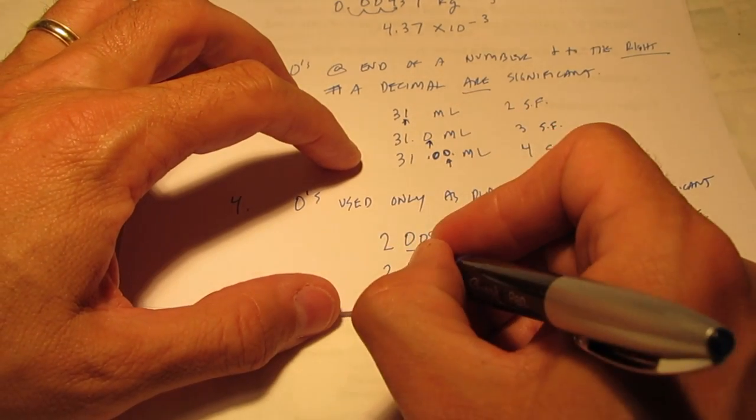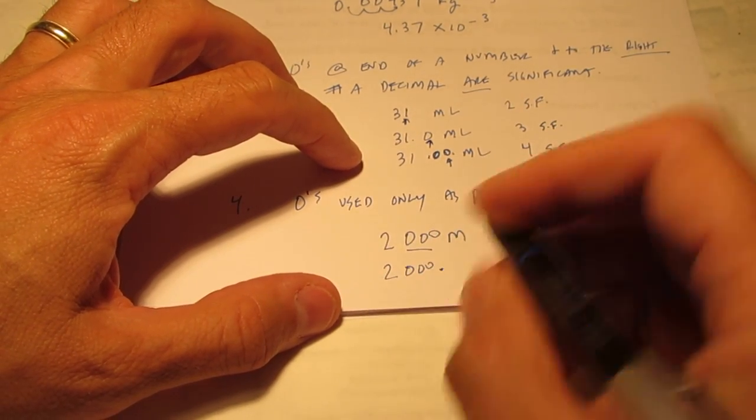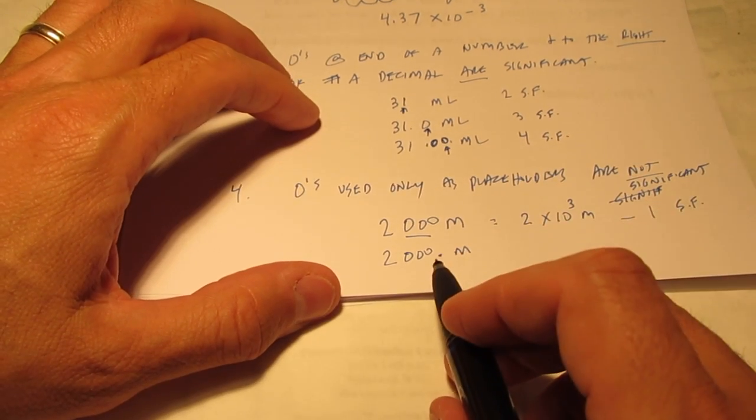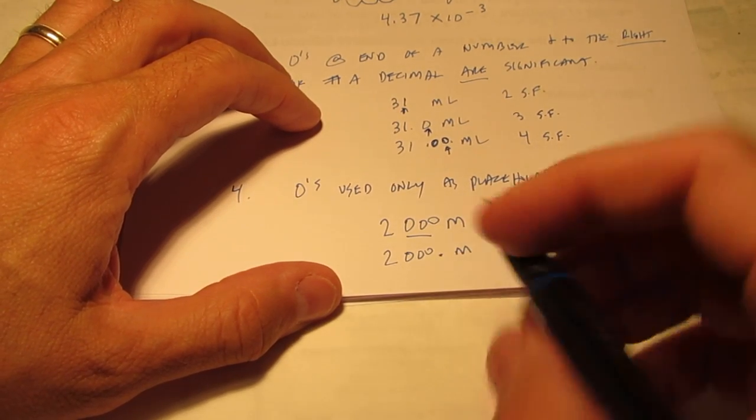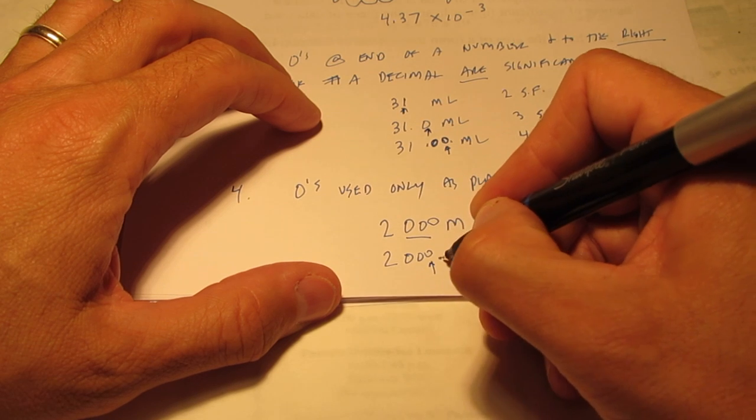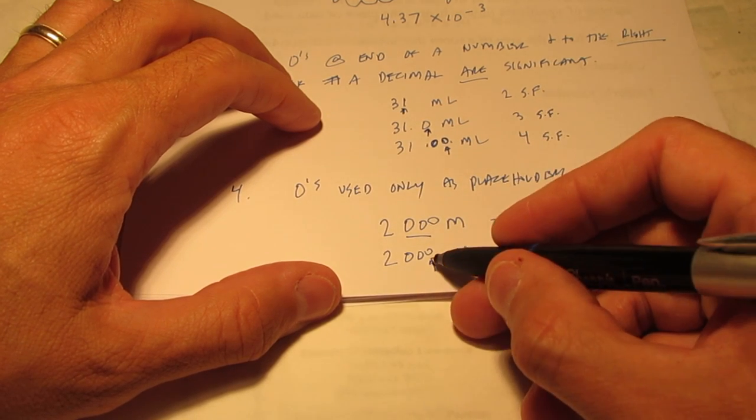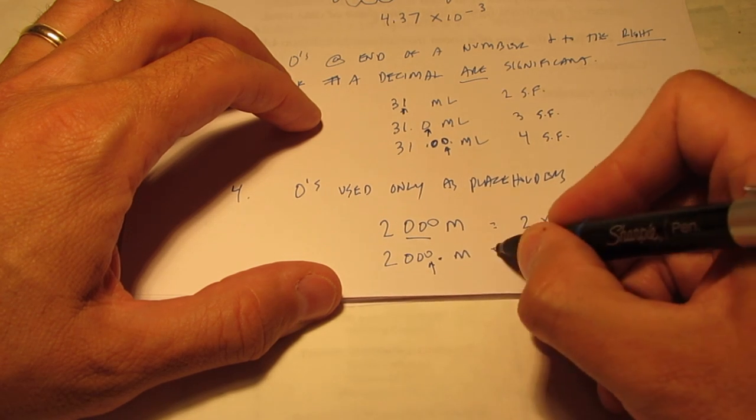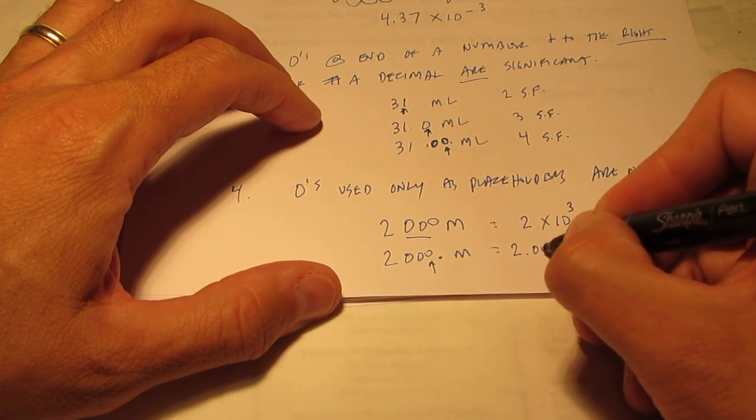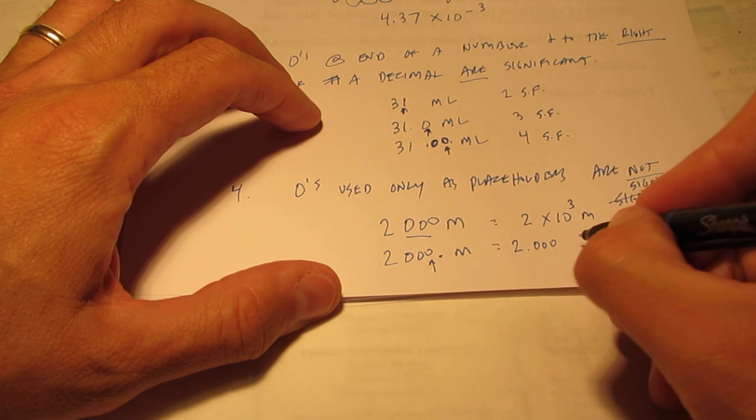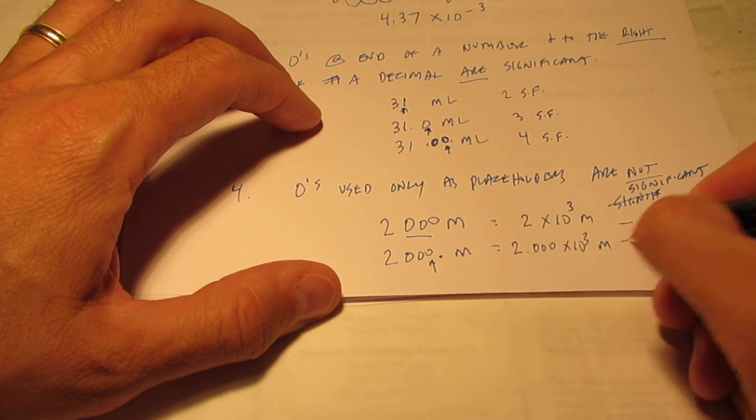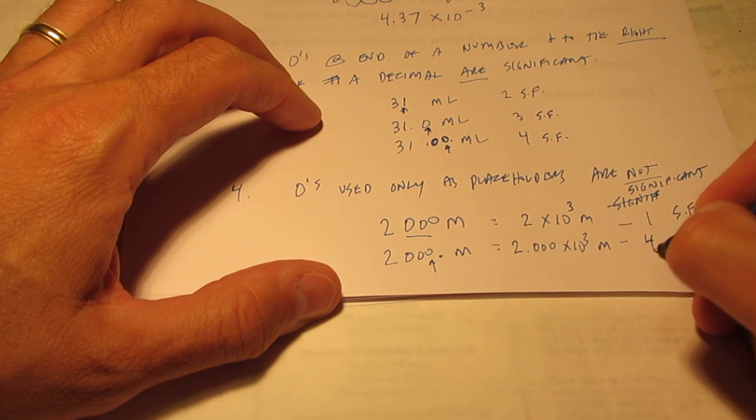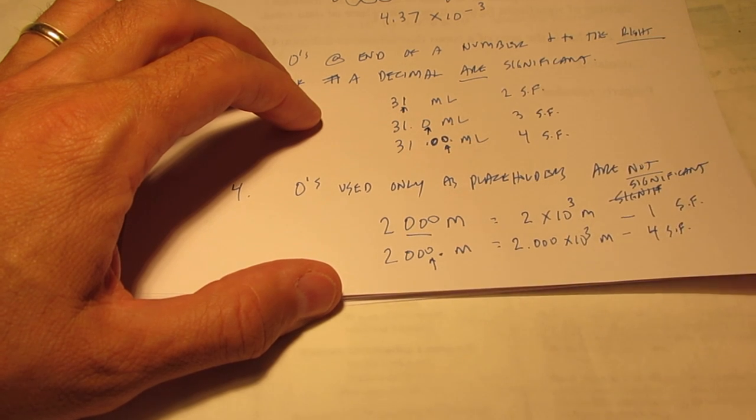However, if I put 2,000 with a decimal at the end, meters. That means the person writing this is telling me that that last zero right before the decimal is estimated. That means I know these other ones for sure. And so to write this in scientific form, I'd have to go 2.000 times 10 to the third meters. And that would have four significant figures.